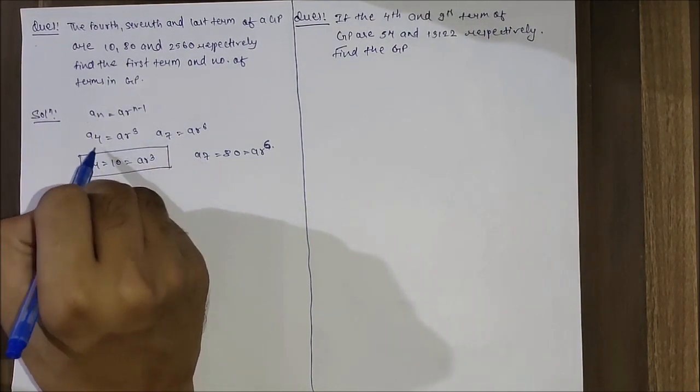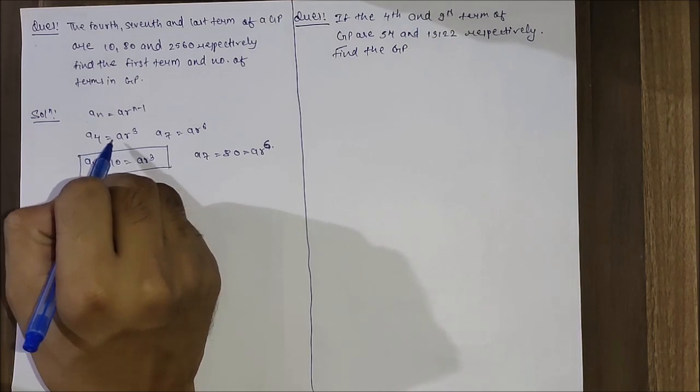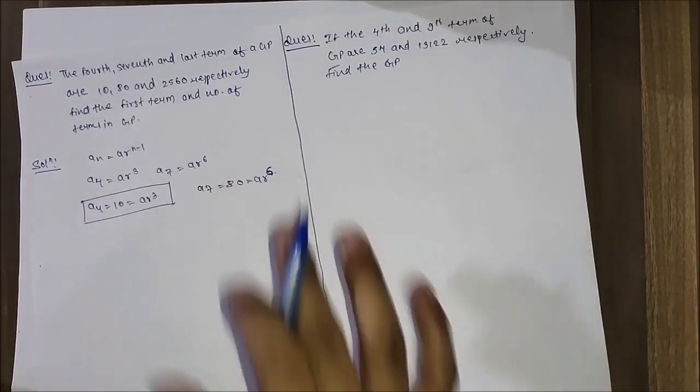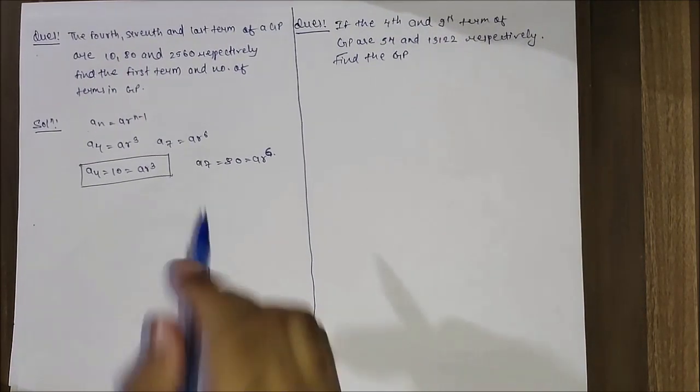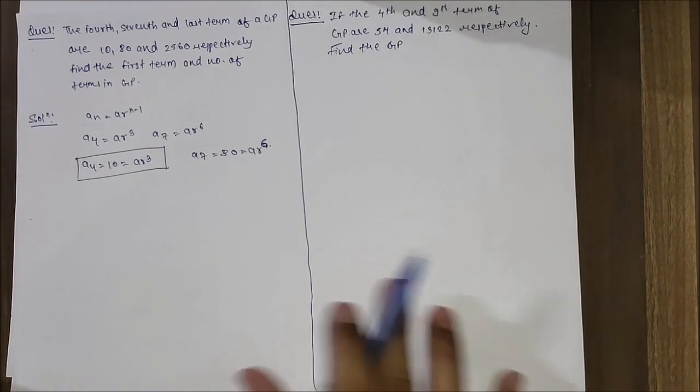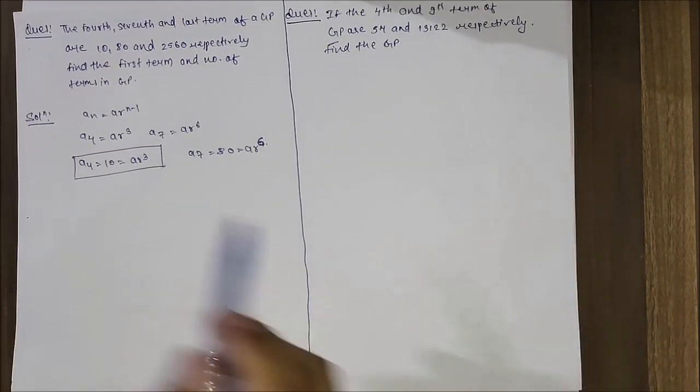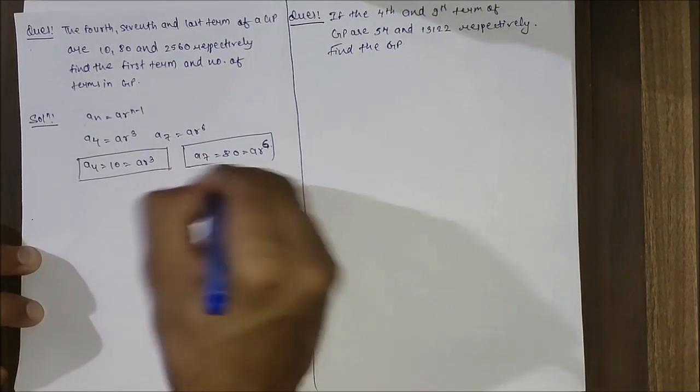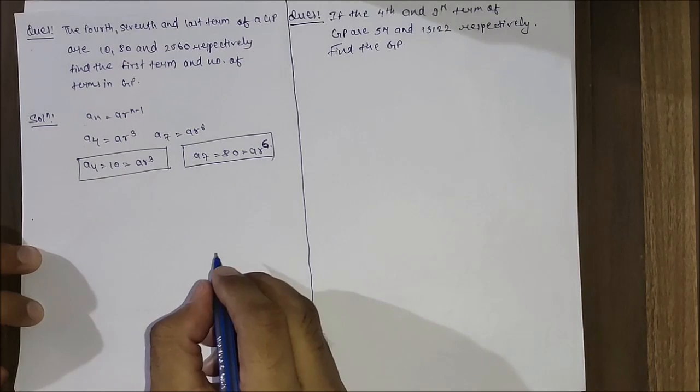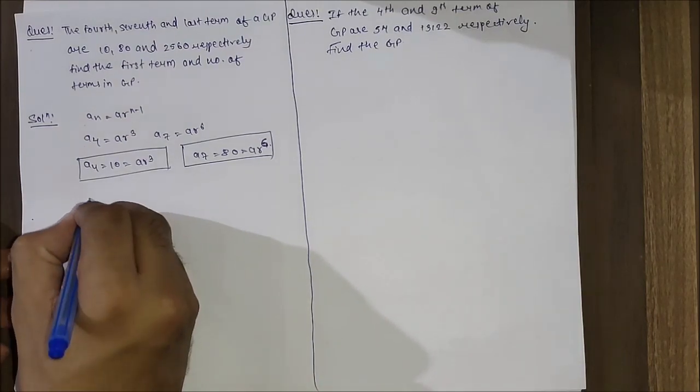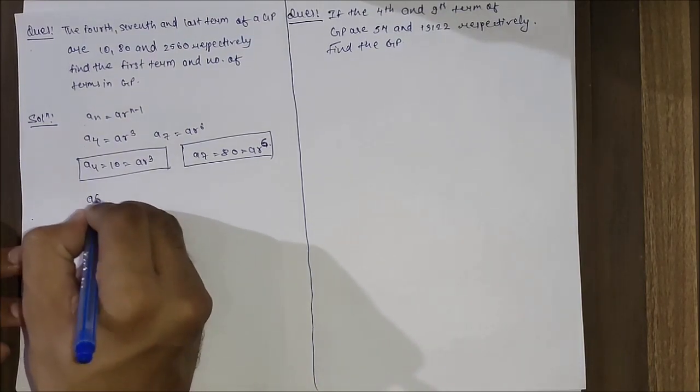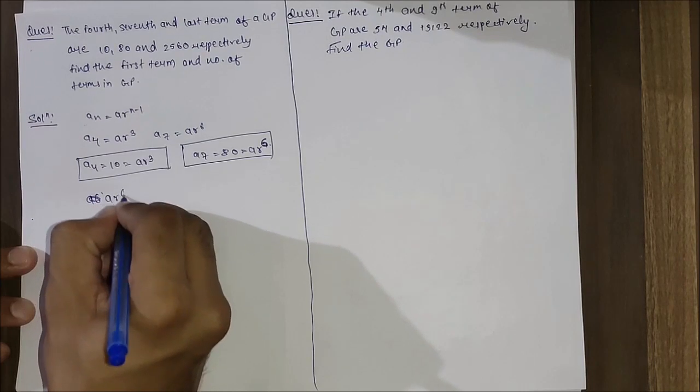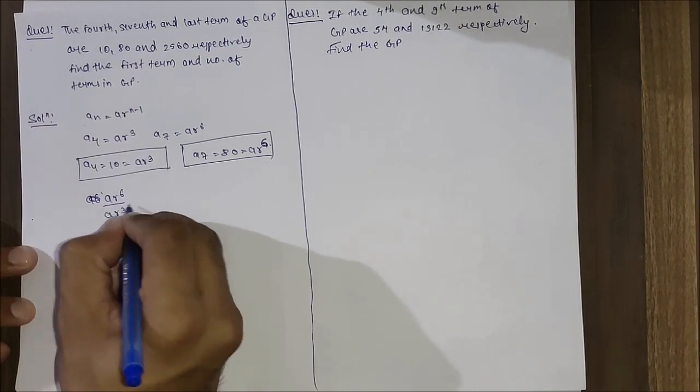We know the formula for nth term is a·r^(n-1). So the fourth term can be written as a4 equals ar³, and the seventh term can be written as ar⁶. So a4 equals 10 equals ar³, and a7 equals 80. Let's divide them and check what we can get.